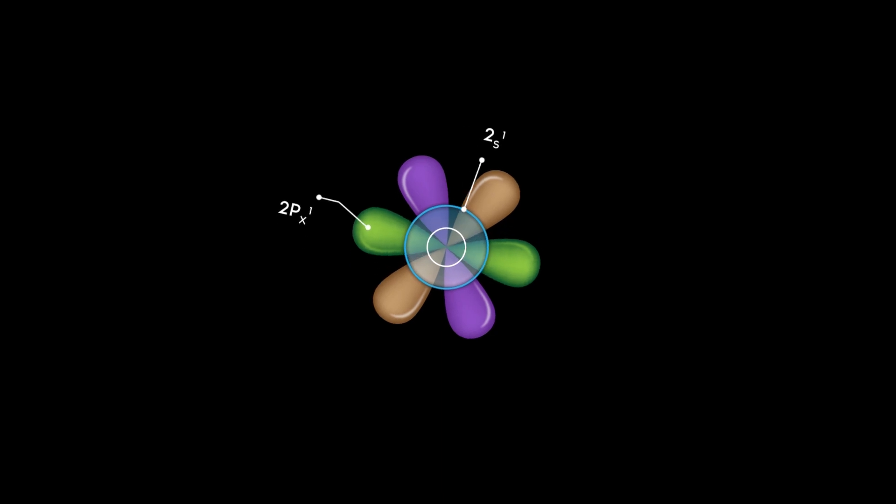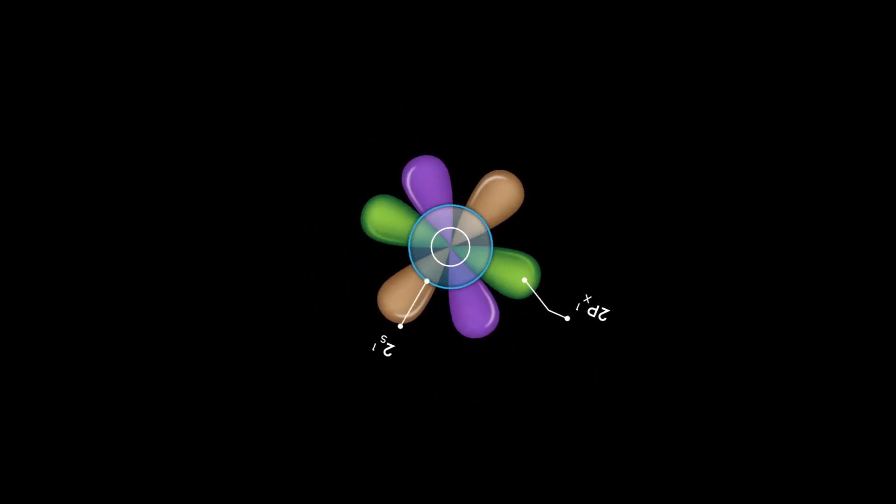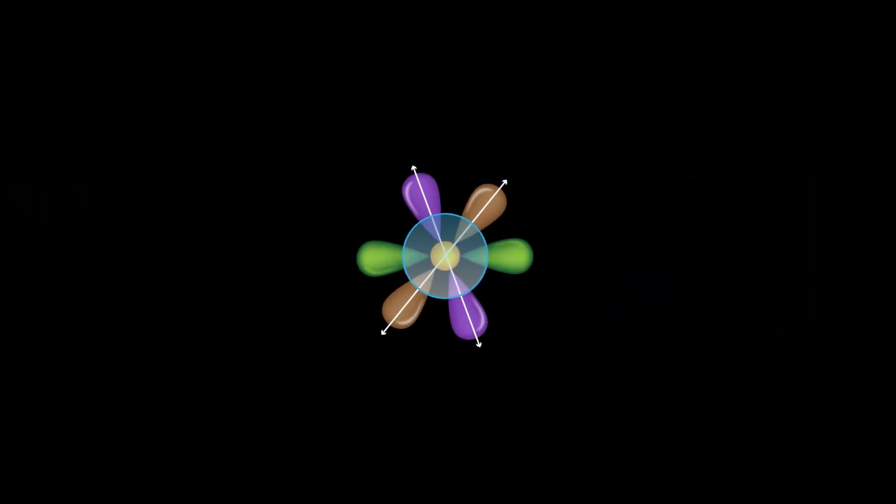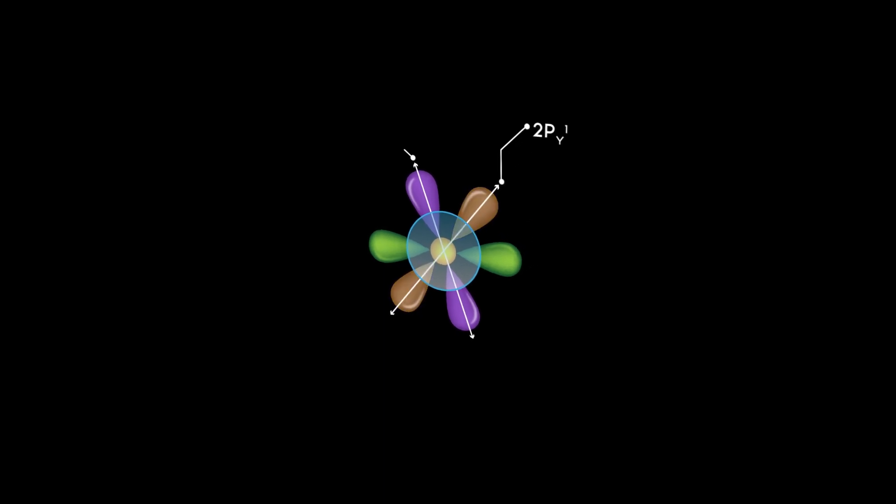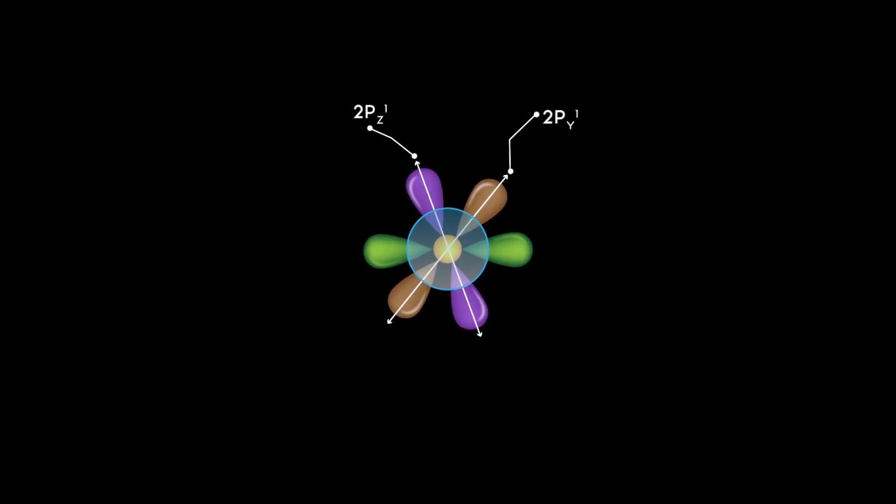These two orbitals intermix, and the intermixing of 2s and 2px orbitals is known as sp hybridization. When sp hybridization occurs, two sp hybrid orbitals are formed. The 2py and 2pz orbitals are not involved in the hybridization.